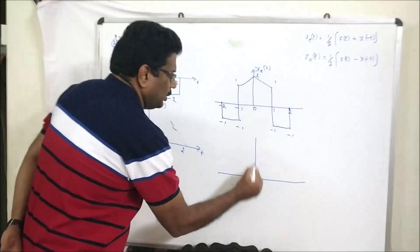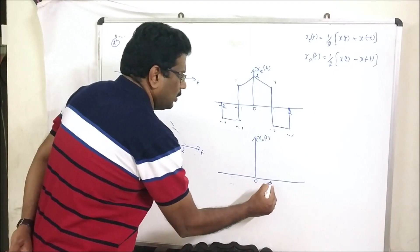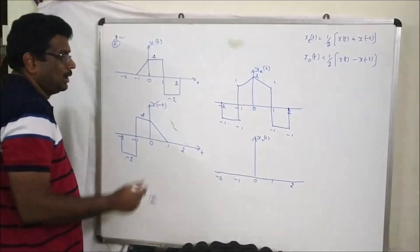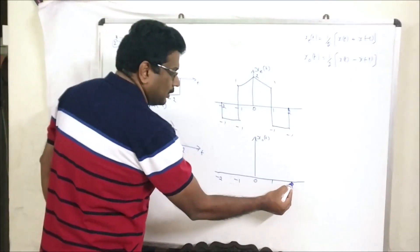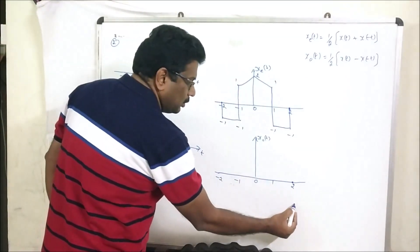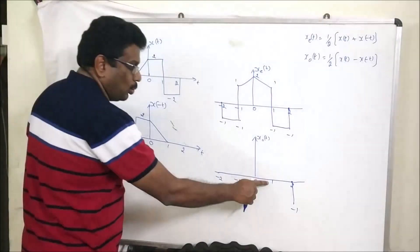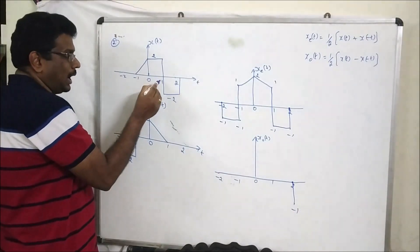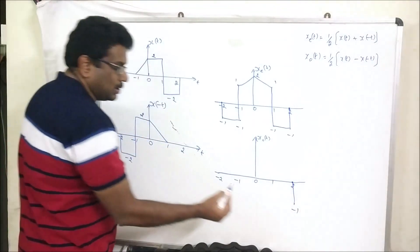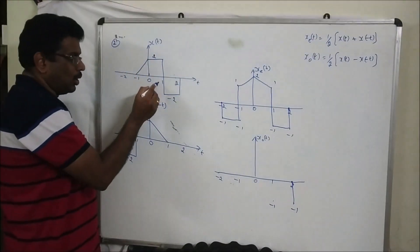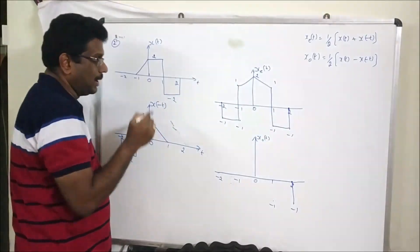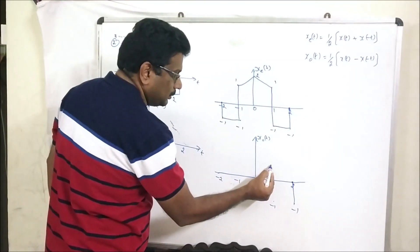Same procedure — you can try for the odd signal. Instead of addition I am going to do subtraction. At location 2: minus 2 minus 0 equals minus 2, divided by 2 equals minus 1. At location 1 from one side: value is 2, other value is 0. 2 minus 0 equals 2, divided by 2 equals 1. From the other side: value is 2, other value is 2. 2 minus 2 divided by 2, subtraction gives minus 1.